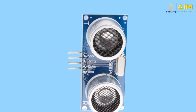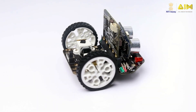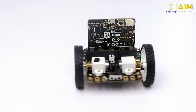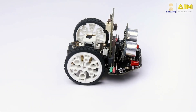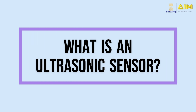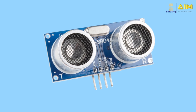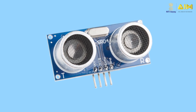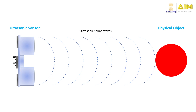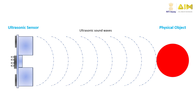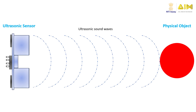You probably have seen one in your ATL. It seems to have two eyes and probably was fitted on top of a robot that moves around. An ultrasonic sensor is a device that uses ultrasonic sound waves to measure the distance, speed and position of a distant object.